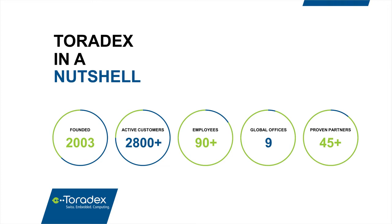Who is Toradex? Toradex was founded in 2003 in Horw, next to Lucerne. We currently have more than 2,800 active customers worldwide. We are a fast-growing company with more than 90 people around the globe and offices in nine different countries. For services beyond the BSP that Toradex provides for free, we have more than 45 proven partners like Kinetics, who presents this webinar today.